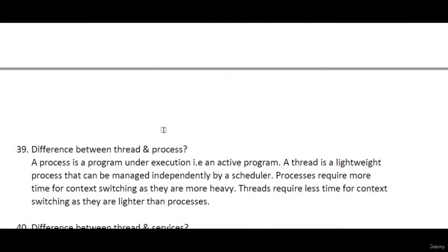What is the difference between a thread and a process? A process is a program under execution — an active program. A thread is a lightweight process that can be managed independently by a scheduler. A process requires more time for context switching because it is heavier, as there can be multiple threads in a process. A thread takes less time because it is very lightweight.